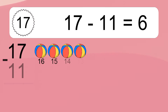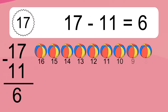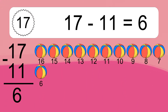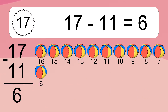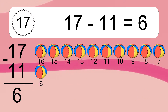17 minus 11 equals what? 17 minus 11 equals 6. Let's count it: 16, 15, 14, 13, 12, 11, 10, 9, 8, 7, 6.